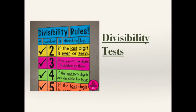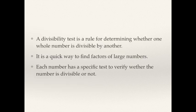The topic for today is test of divisibility or divisibility rules. A divisibility rule or divisibility test is a rule for determining whether one whole number is divisible by another or not. Supposing it's a huge number and you need to check whether it's divisible by 3 — generally you divide and check physically, which takes time. But using these divisibility rules you can tell within a few seconds. That is the beauty of these divisibility tests — it's a quick way to find factors of very large numbers. Each number has a specific test to verify whether it is divisible or not.